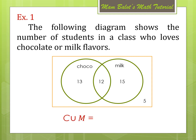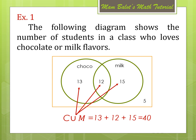If we find C union M, meaning the students who love choco or milk, that would be the students which are 13, 12, and 15, since they all love choco or milk. So, we have 13 plus 12 plus 15, which is equal to 40. There are 40 students who love choco or milk.